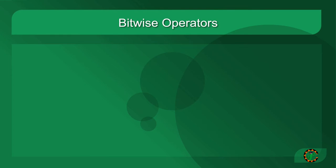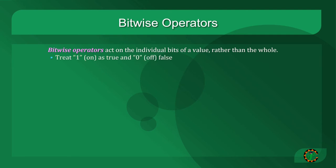One of the most practical applications for propositional logic is what we call bitwise operators. The way bitwise operators work is that they act on individual bits of a value rather than the whole value. They treat a 1 on as true and a 0 off as false. Many of these are based on proposition connectives. They also allow shifting or moving bits to the left or right.